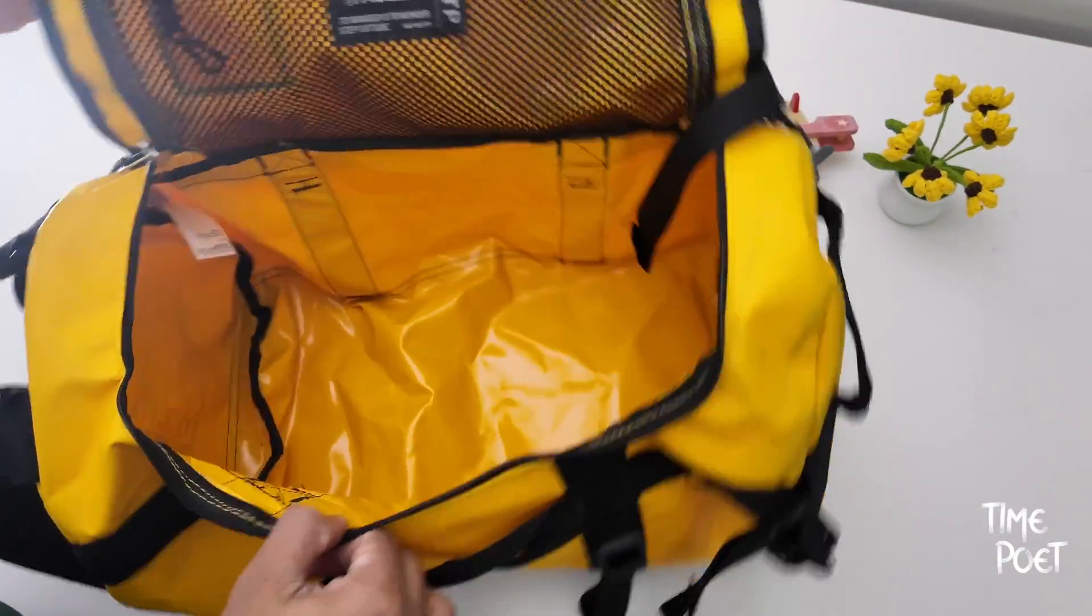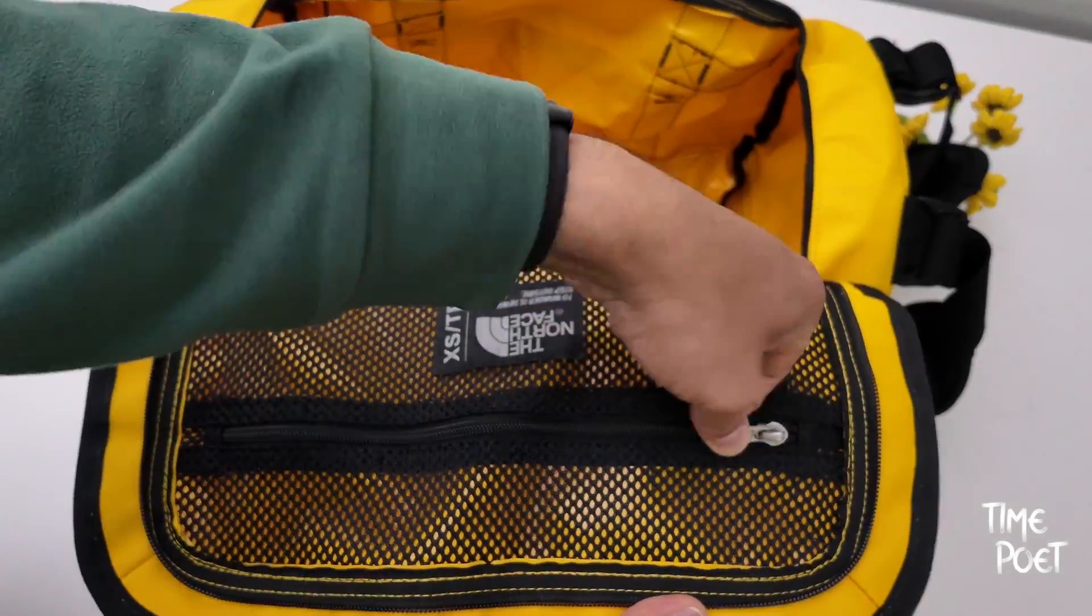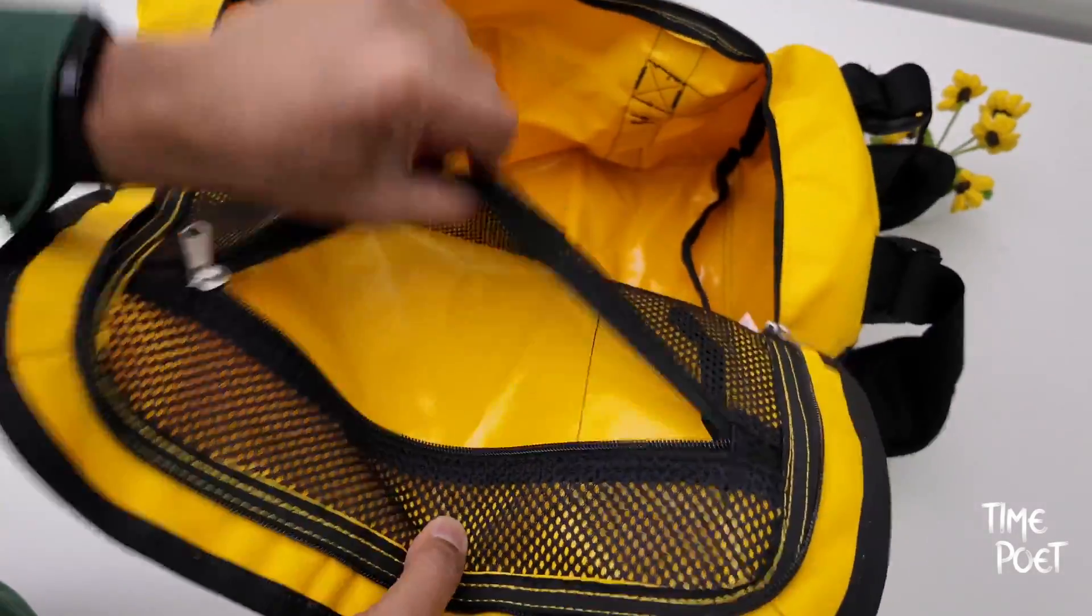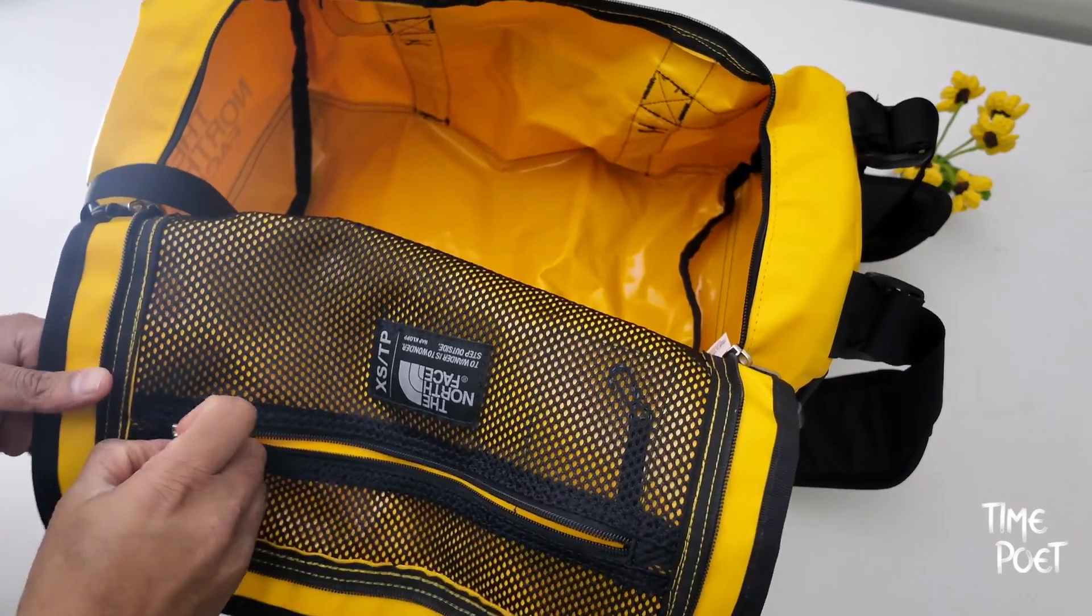The bag's main compartment features a secure zip mesh pocket and an end cap mesh sleeve pocket for added organization. This compact mesh compartment is breathable yet spacious enough to securely house smaller items.